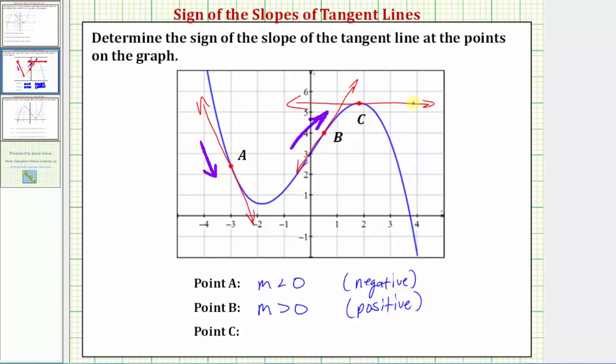And then at point c we have a horizontal tangent line. Horizontal lines always have a slope of zero. Notice from left to right the graph does not go up or down. It stays constant, which means the slope is zero.